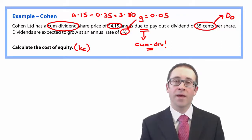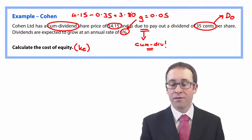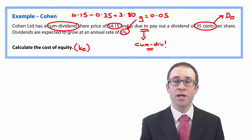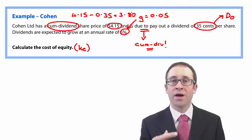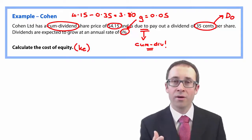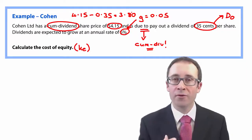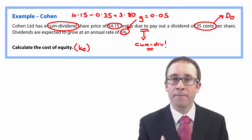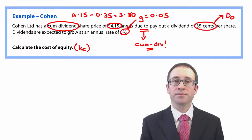So, given that you've got the ex-div share price, the growth rate, and D0, why don't you stop the video, have a go, work it through, see how you get on, and then restart the video.